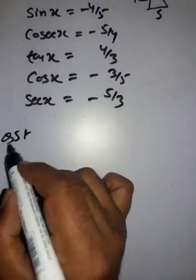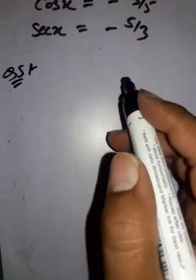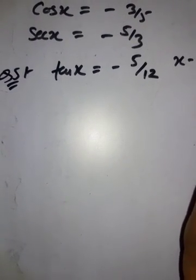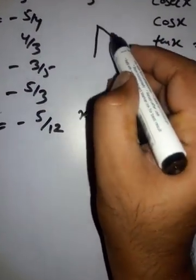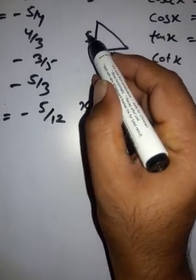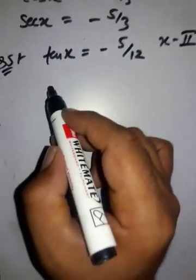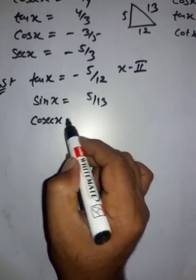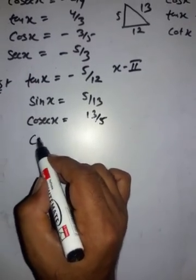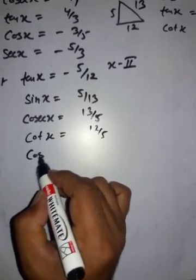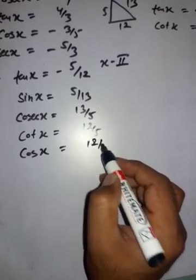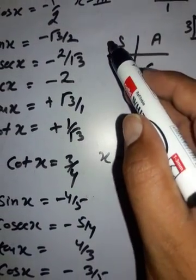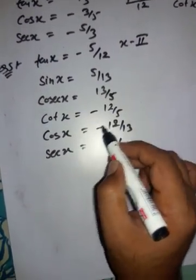Question 5: tan x = -5/12 and x lies in the 2nd quadrant. By the right triangle, perpendicular = 5 and base = 12, so hypotenuse = √(144 + 25) = √169 = 13. The ratios are: sin x = 5/13, cosec x = 13/5, cot x = 12/5, cos x = 12/13, sec x = 13/12. In the 2nd quadrant, sin and cosec are positive; the rest are negative.